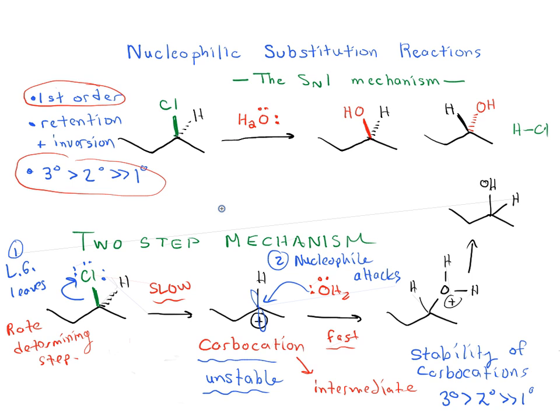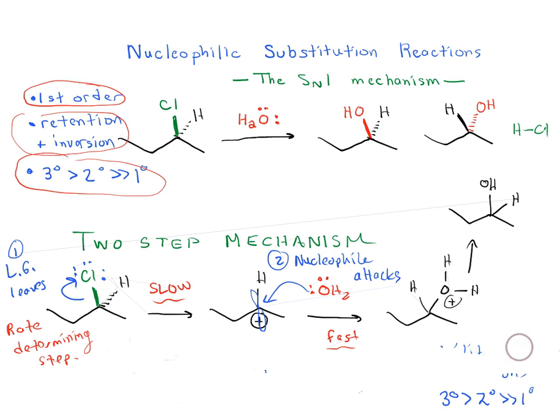We understand why the reaction is first order, because the rate-determining step is a slow step here. Hopefully we understand why this reaction is favored for tertiary faster than secondary, which is faster than primary, because we're giving a more stable carbocation. Now this last part, the retention and inversion, this is the last part we're going to discuss here, and this is interesting.